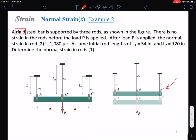Since bar one, L1, is tied to rigid bar ABC at point A, and the other one is tied at point C, we can write that delta one, the elongation of this first bar here...